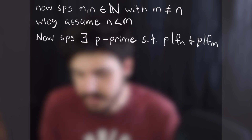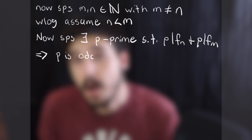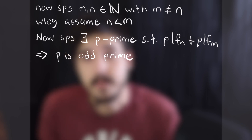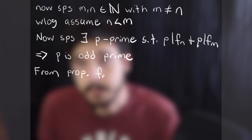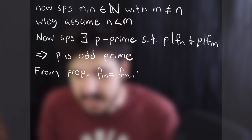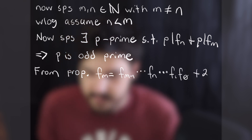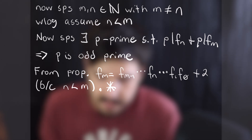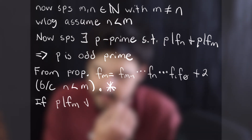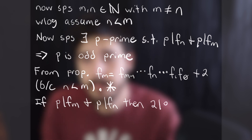With that claim proven, we return to the original problem. Suppose m and n are distinct natural numbers; without loss of generality, assume n is less than m. Suppose some prime p divides both f_n and f_m. Since all Fermat numbers are odd, p must be an odd prime. By our proposition, f_m can be written as a descending product containing f_n, so f_m equals f_{m-1} times ... times f_n times ... times f_0 plus 2. But if p divides f_m and f_n, then p must divide 2, which is impossible — that contradiction completes the proof.